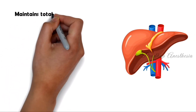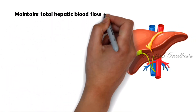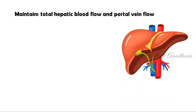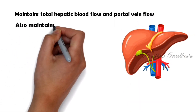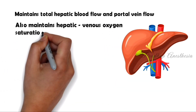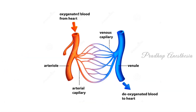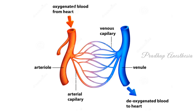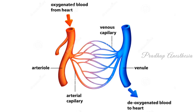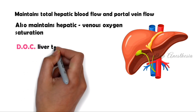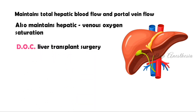Isoflurane maintains total hepatic blood flow and portal vein flow, and also maintains hepatic venous oxygen saturation — the percentage of oxygen bound to hemoglobin in the blood returning to the right side of the heart. As it maintains hepatic blood flow, isoflurane becomes the drug of choice for liver transplant surgery.